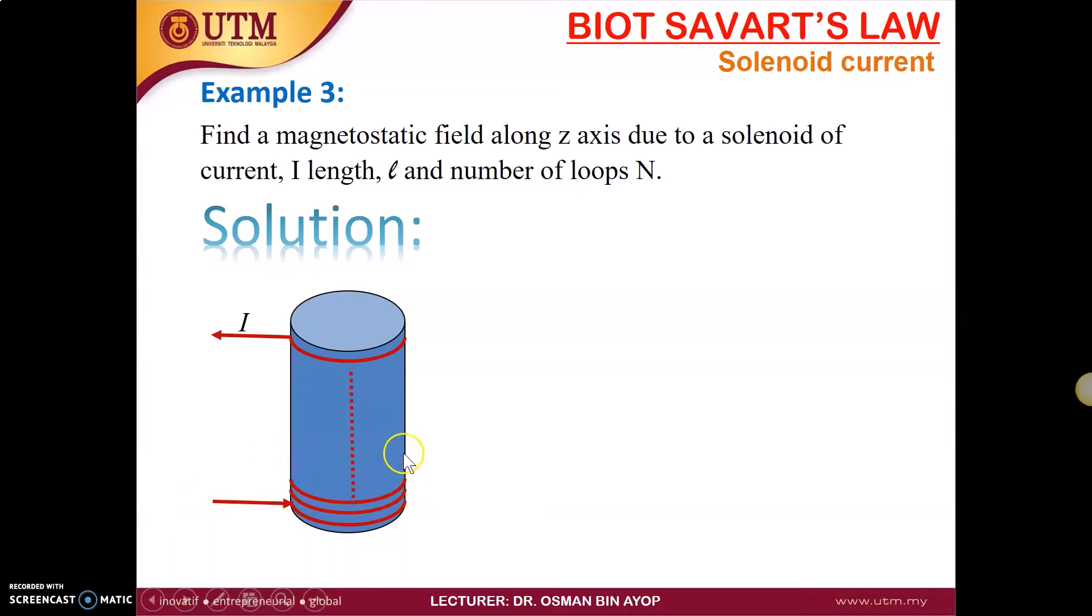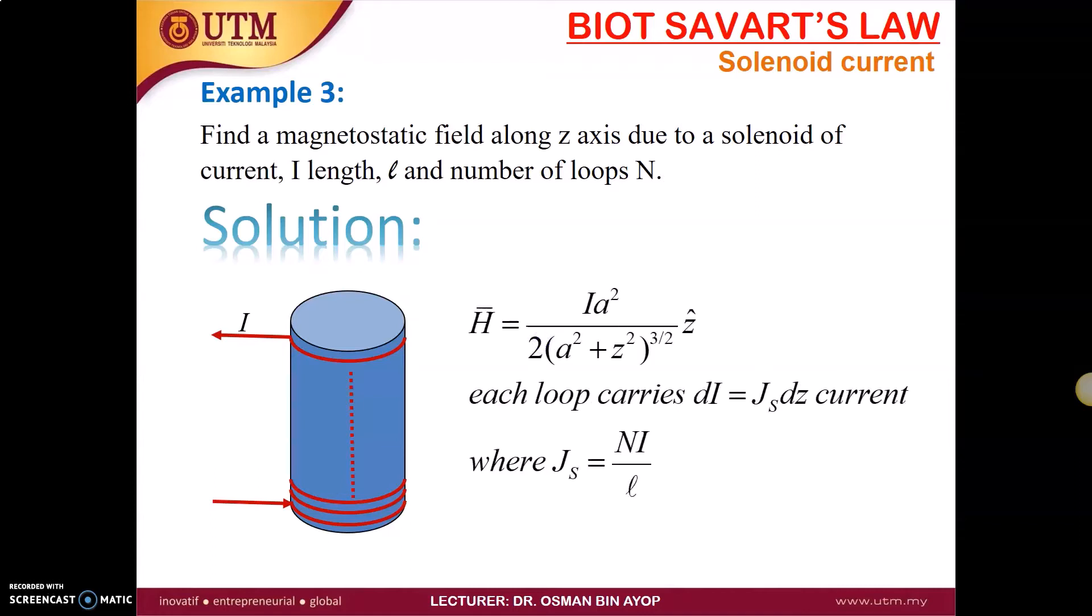To solve this problem, it's just like a combination of multiple loop currents, so we can use the solution that we did for the single loop current and apply it to a solenoid. This is the solution that we did for the one circular loop current.